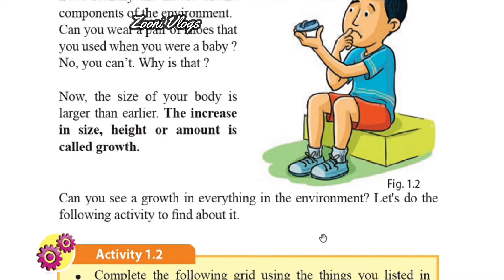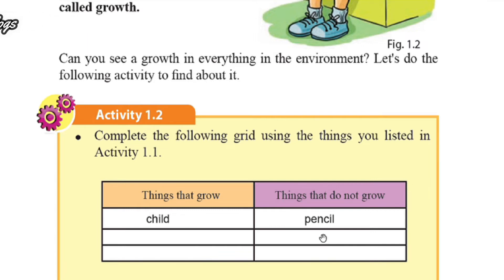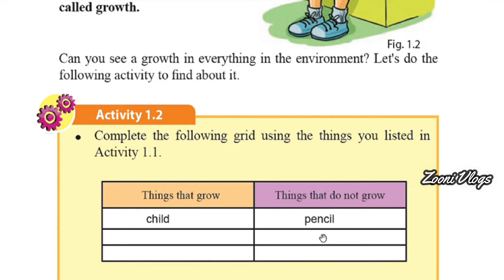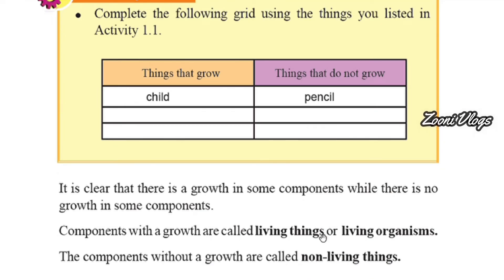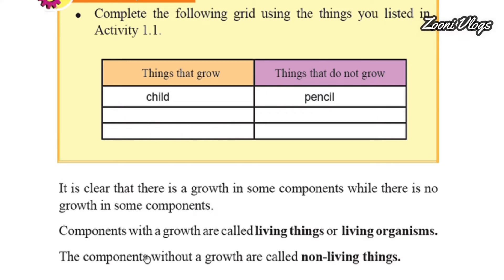Let's do the following activity to find out what are the living things — that means living organisms — and the things that do not grow, meaning non-living things, or man-made things. Things that grow are living organisms, including children, animals, and many more. Things that do not grow are non-living, artificial, man-made things. So it is clear that there is growth in some components while there is no growth in others. Components with growth are called living things or living organisms; components without growth are called non-living things.